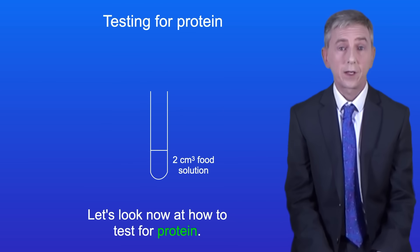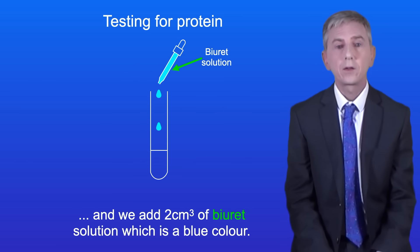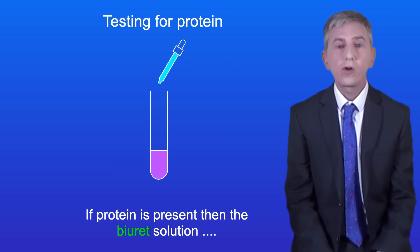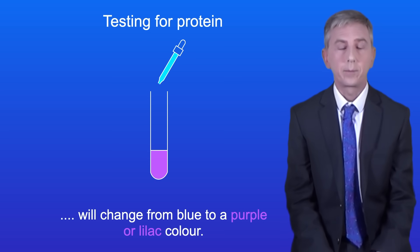Let's look now at how to test for protein. To do this test, we take 2cm³ of a food solution and we add 2cm³ of biuret solution, which is a blue colour. If protein is present, then the biuret solution will change from blue to a purple or lilac colour.